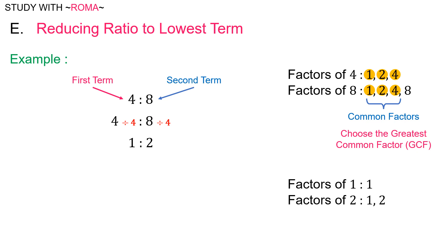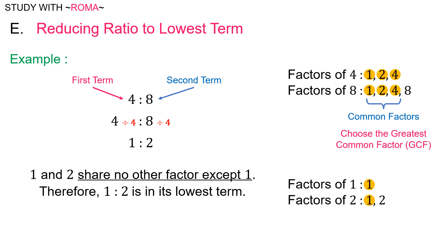The factors of one is only one. The factors of two are one and two. One and two share no other factor except one. Therefore, one is to two is in its lowest term. Four is to eight will be reduced to one is to two.